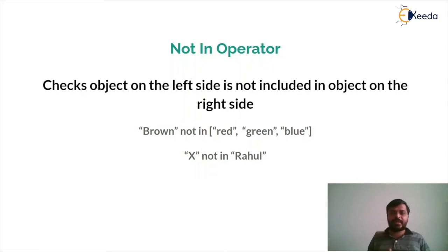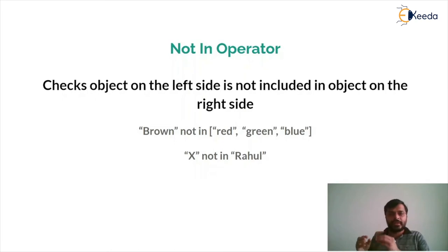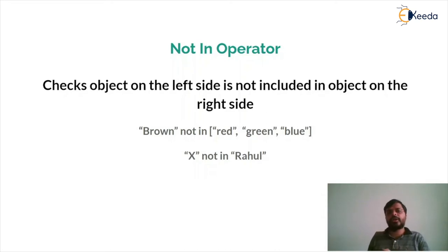Syntactically it works the same way — checking whether an element does not exist in the list, or a substring or sequence of characters does not exist in a string. Let's see an example of this.